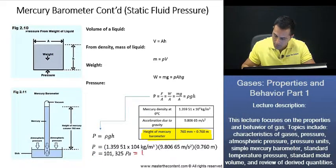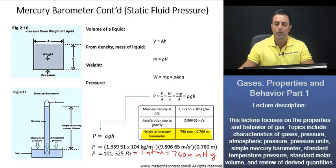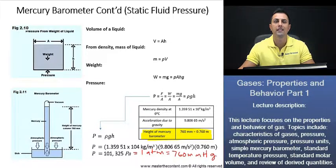Which is going to be equivalent to one atmosphere, which is equivalent to 760 millimeters of mercury. Okay, great. Let's now continue on to our next slide.